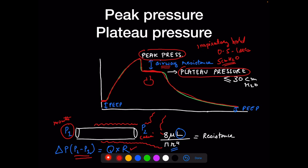There is another reason PEEP is needed: the ET tube is smaller than the trachea, so it creates resistance. Flow through a tube generates a pressure gradient; resistance equals 8 × viscosity × length divided by π × radius⁴. The radius to the fourth power is the key variable — a larger tube dramatically reduces resistance. This is also why heliox works — lower viscosity. Normal tracheal flow is turbulent; tube flow is laminar. A tube of 7.5 has a resistance equivalent to about 7 cmH2O pressure difference; a tube of size 9 has about 5 cmH2O difference.